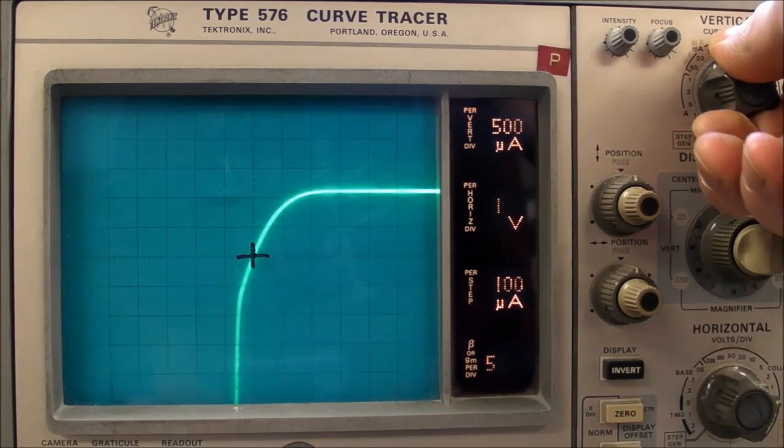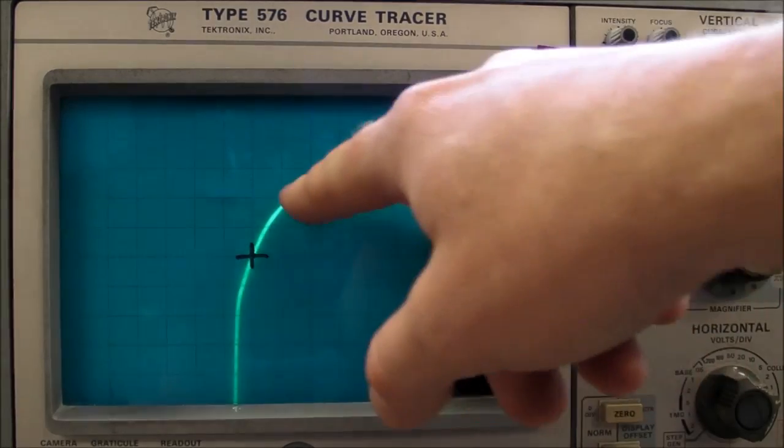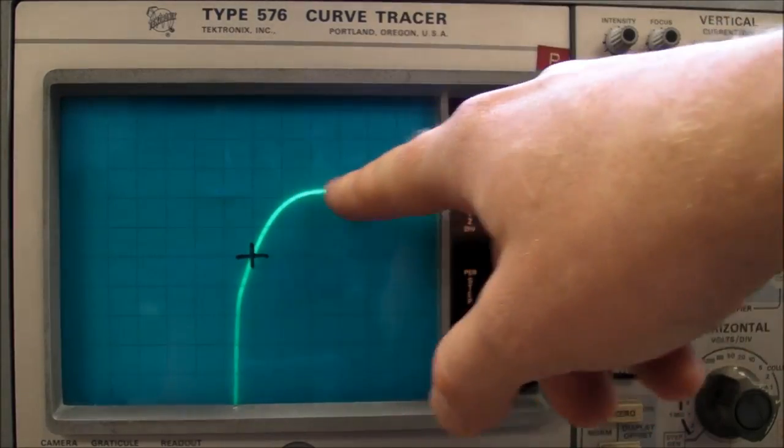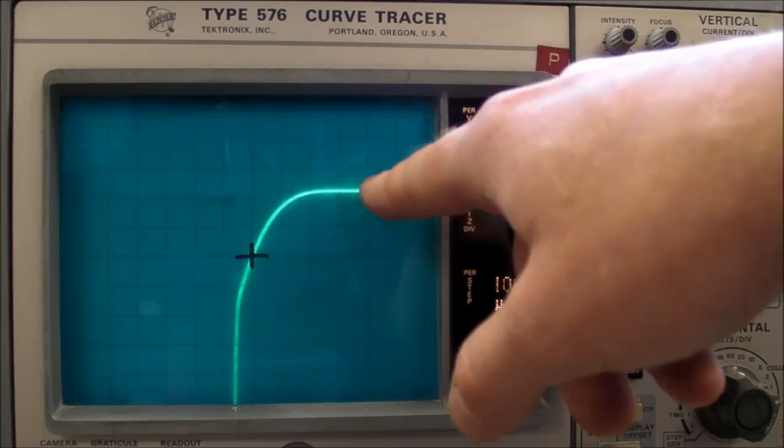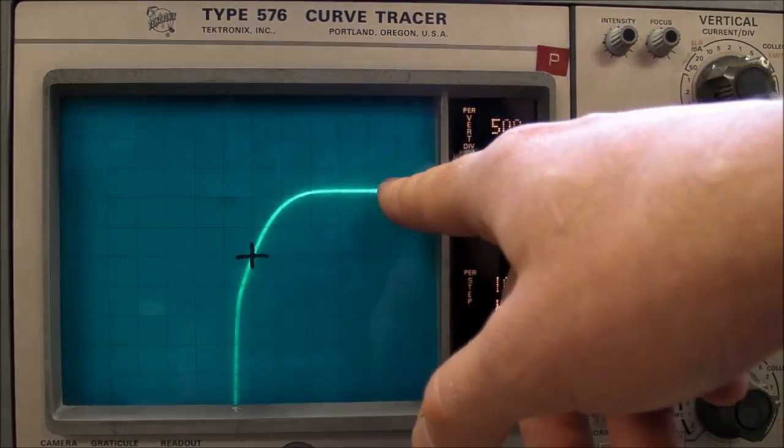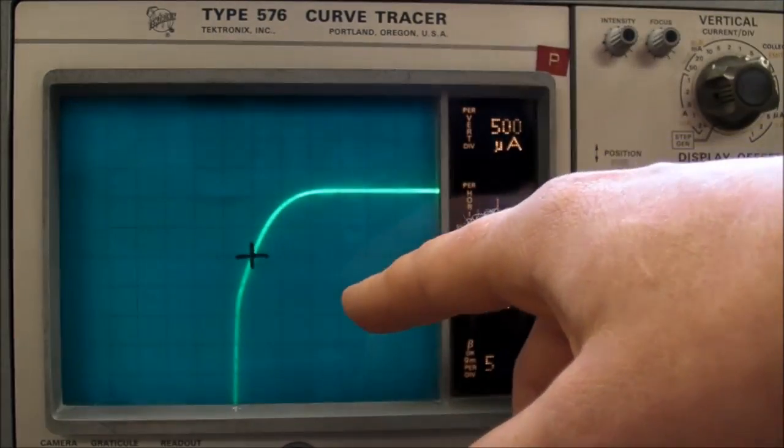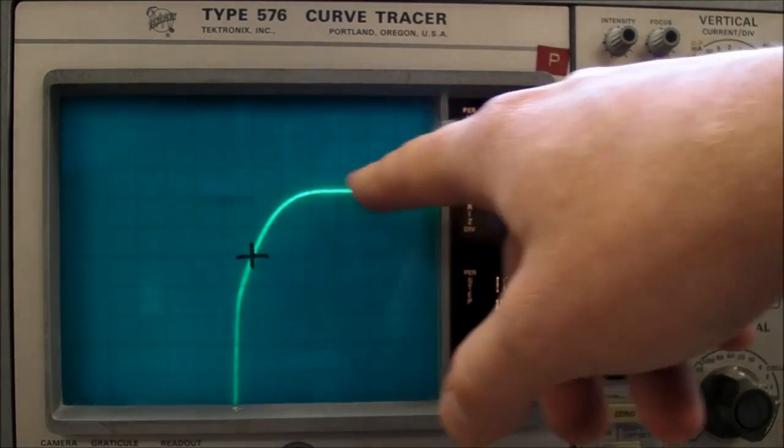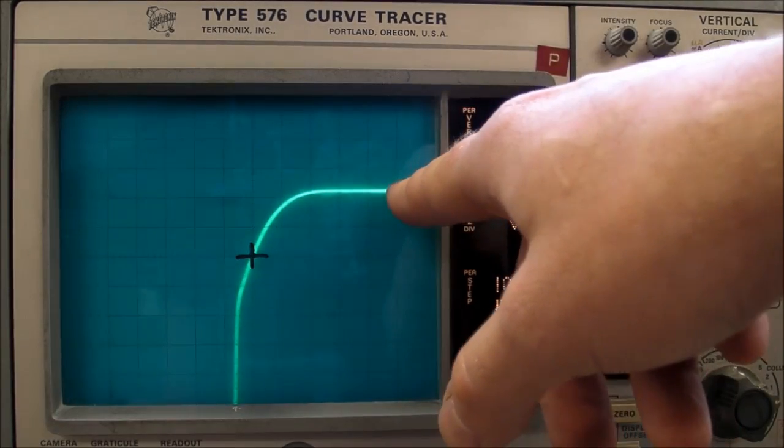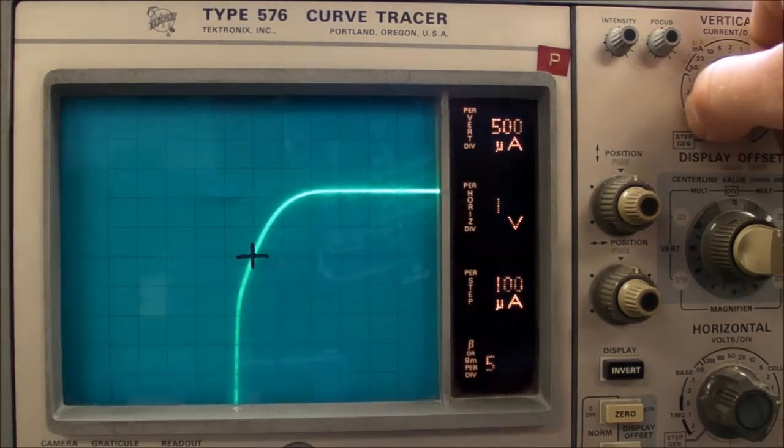Looking at half a milliamp per division, and you can see how the current in the reverse bias, or in this case, we'll call it forward bias now because it is actually a 1 milliamp current regulator or current limiter. You put whatever voltage on it, it doesn't matter, it'll just limit the current through it to 1 milliamp, and I think it's a very useful component.